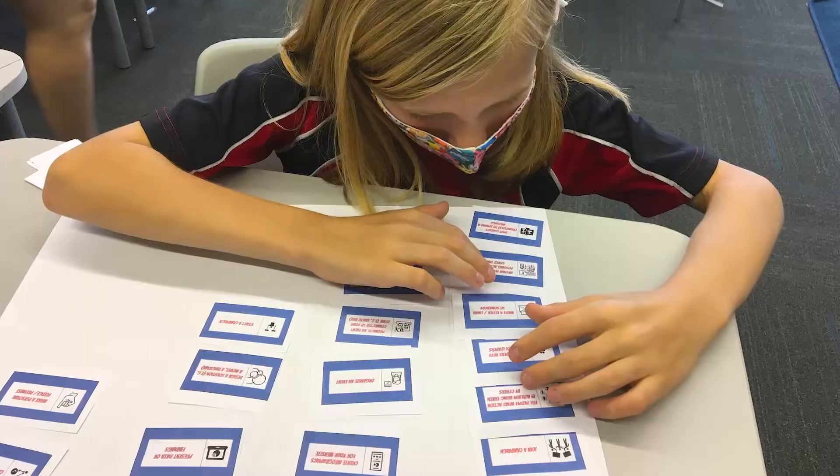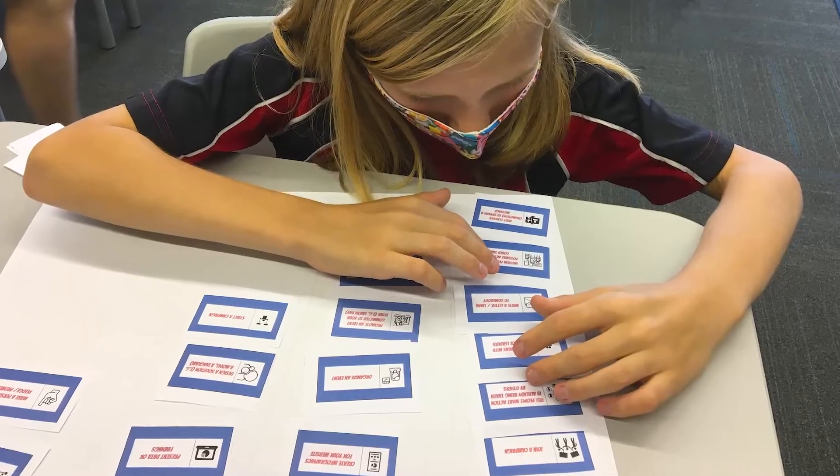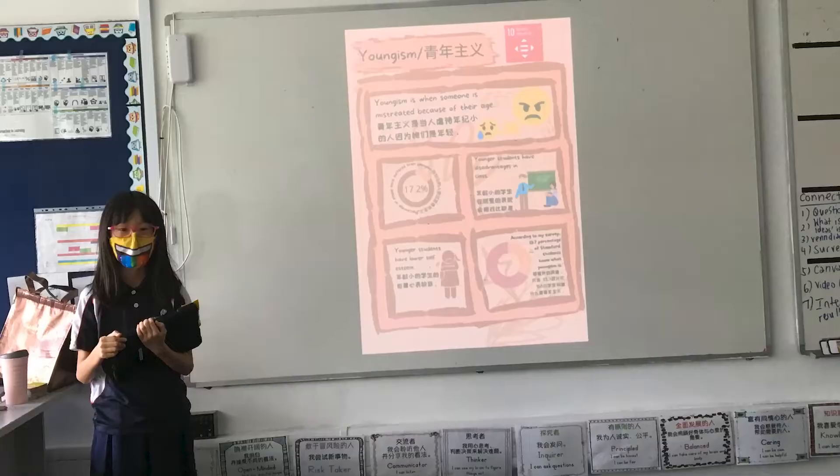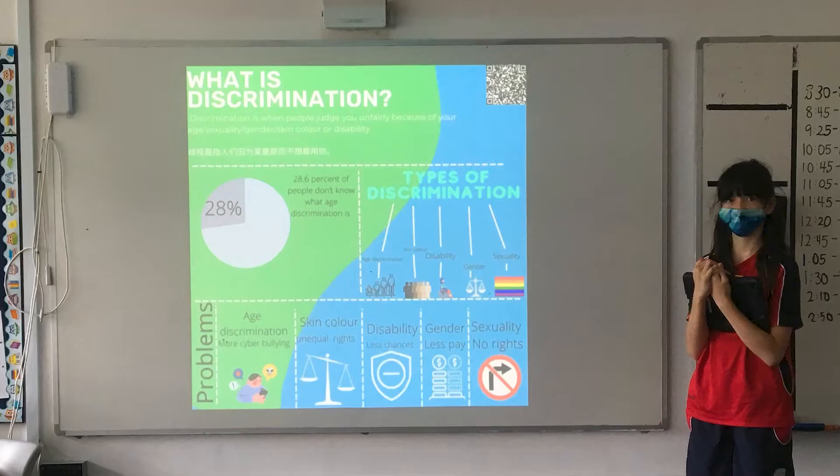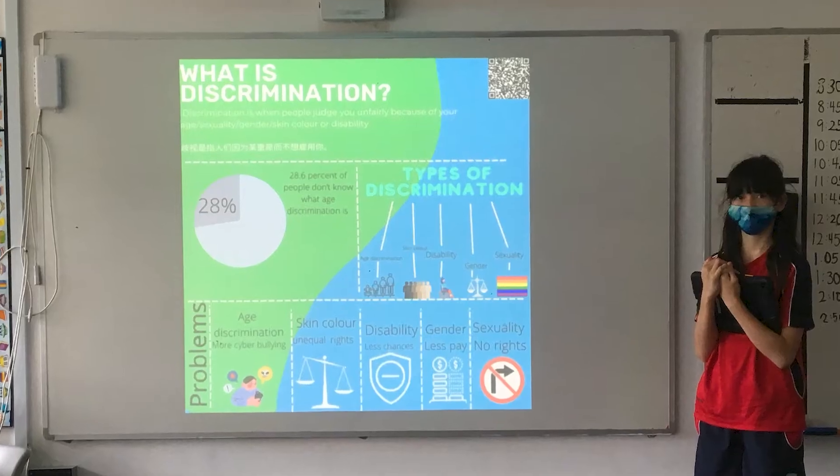During this stage, kids might be completing organizers such as a Venn diagram, future's wheel, maybe a connection circle, or a fishbone diagram. These tools really guide them with their thinking as they take their inquiries further.